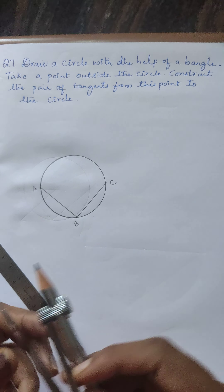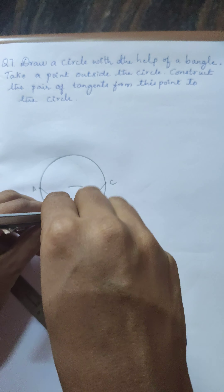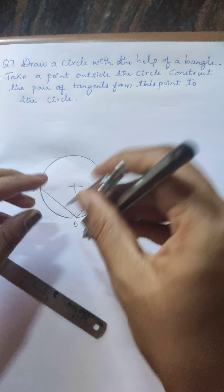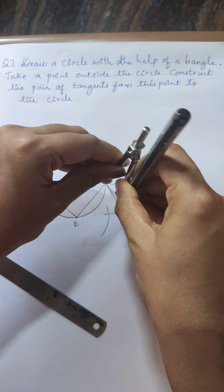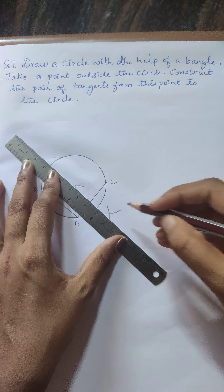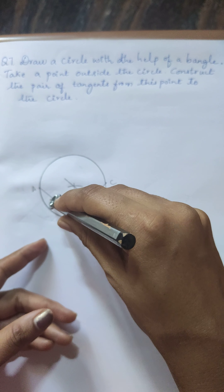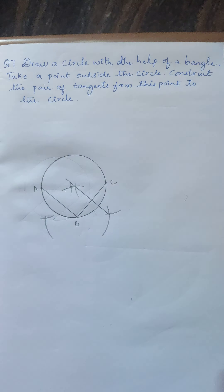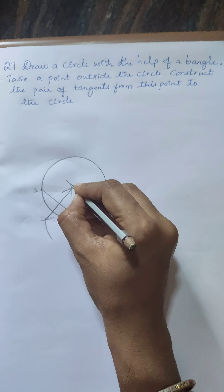Taking more than half, cut an arc from both sides. Then take another pair of points, again take more than half, cut arcs, and join the lines. Where the two perpendicular bisectors meet, you get one point — take that point as the center O.